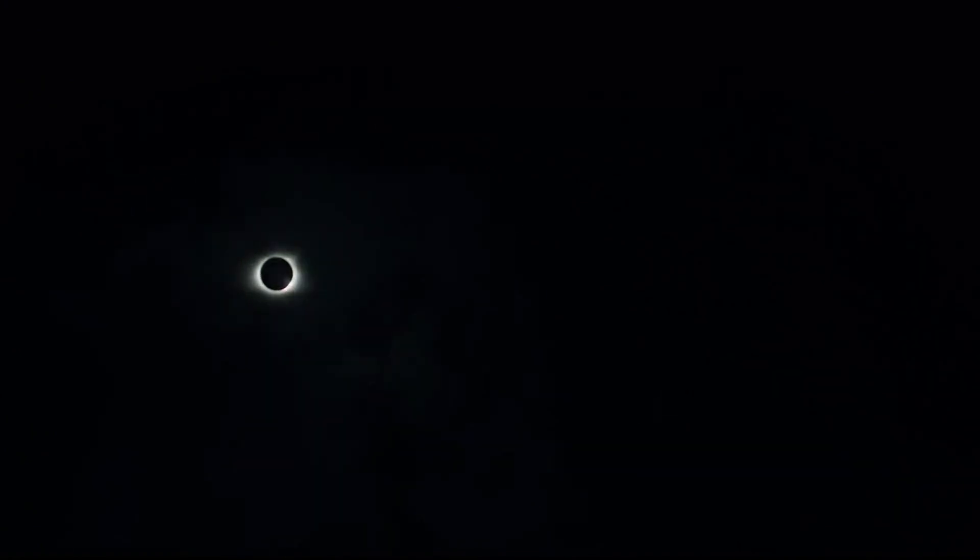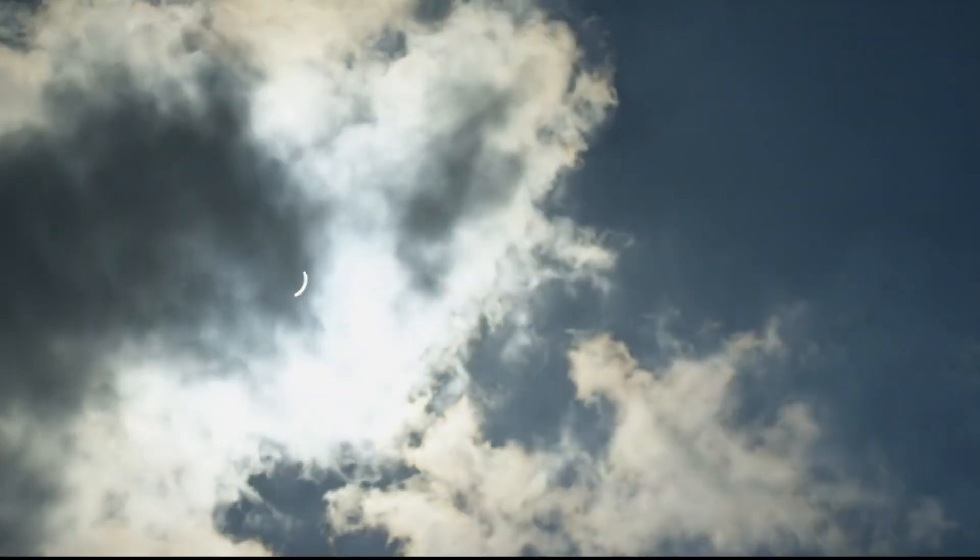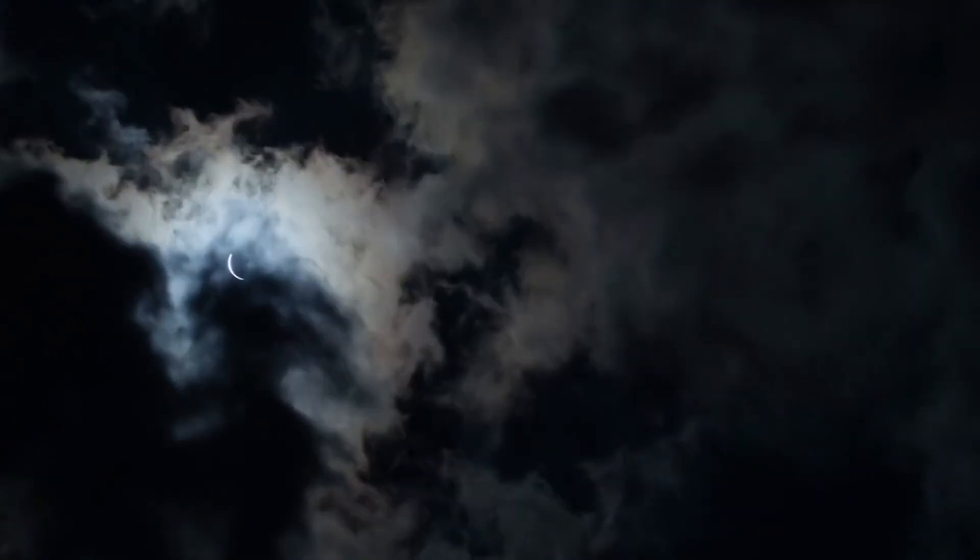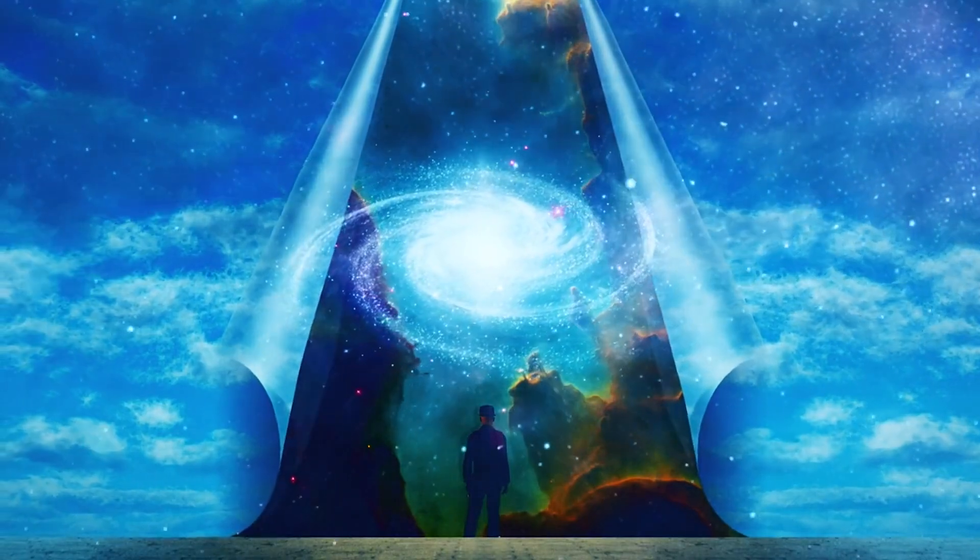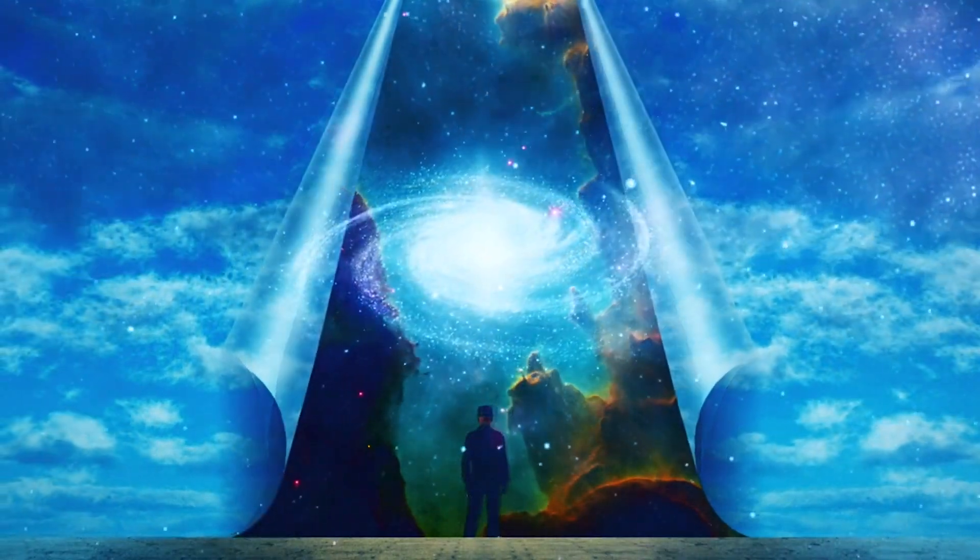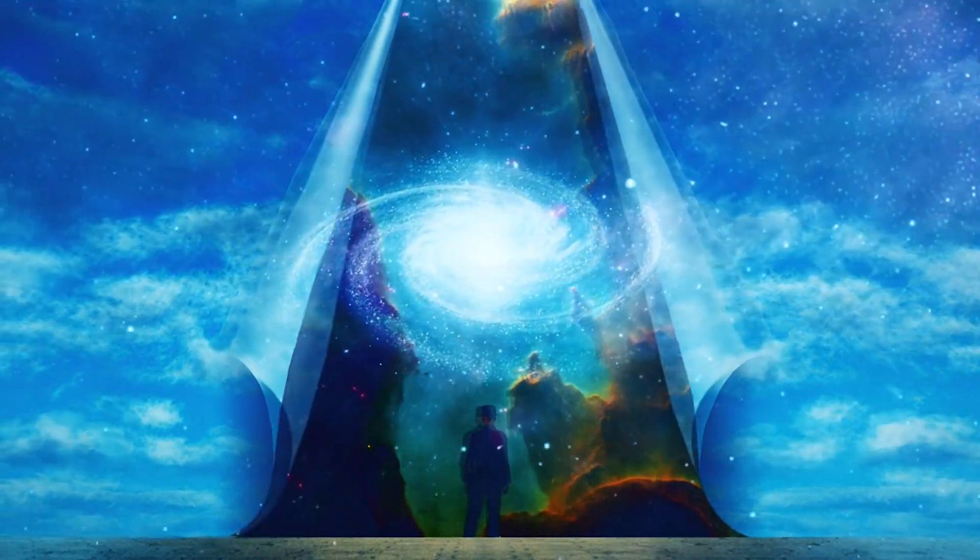states, 'The sun shall be turned into darkness, and the moon into blood before the great and terrible day of the Lord comes.' Let's unravel the meaning behind these words and understand the spiritual implications of solar eclipses according to the Bible.